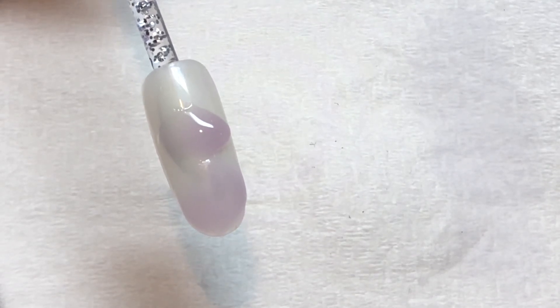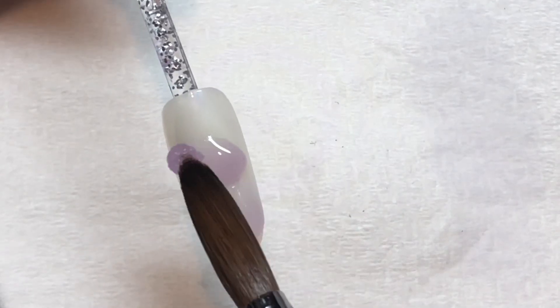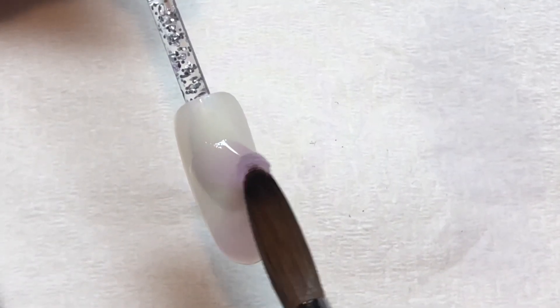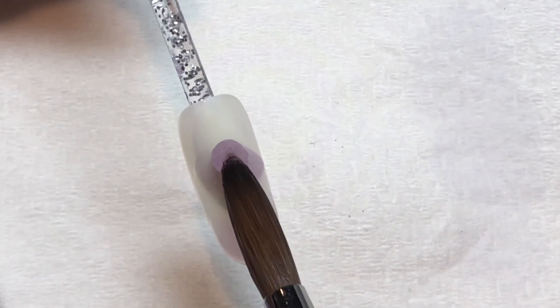It's all about angling the brush up so that you create the shape of the nail and the bulk of your product is going to be going towards the arch.